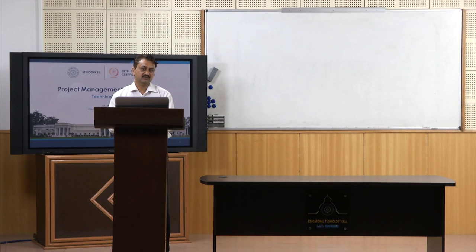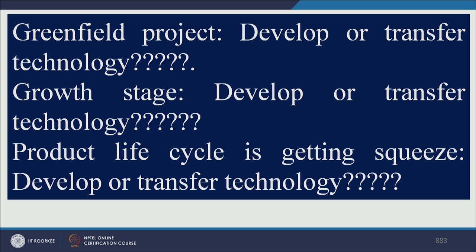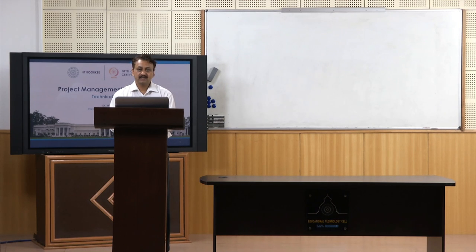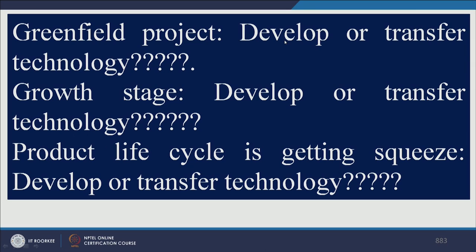There are basically two sources of technology: you either develop it or buy it. If you are coming up with a new greenfield project — a new project, not an expansion — what decision should you take? In a greenfield project, it is good to get technology from a supplier through technology transfer, rather than developing it, because development of technology takes lots of time and lots of investment.